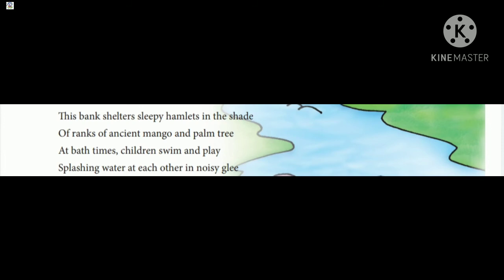Through this paragraph, the poet wants to say that from ancient times, trees like mango and palms grew near the riverbanks, which gave shade and cool air to hamlets. Also, children liked to play and swim and throw water at each other. इन पंक्तियों द्वारा कवि कहना चाहते हैं कि पहले के जमाने में आम और पाम के पेड़ नदी किनारे पर थे जो कुछ बस्तियों को छाँव और ठंडी हवा देते थे और गर्मियों में बच्चों को तैरना, नहाना और एक दूसरे पर पानी उछालना अच्छा लगता था।